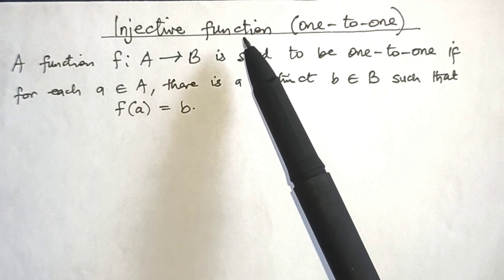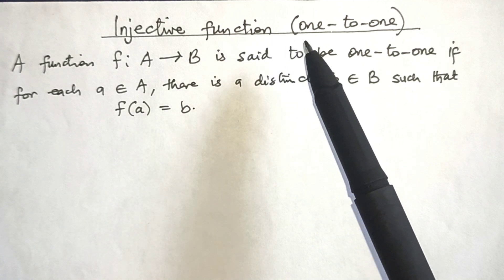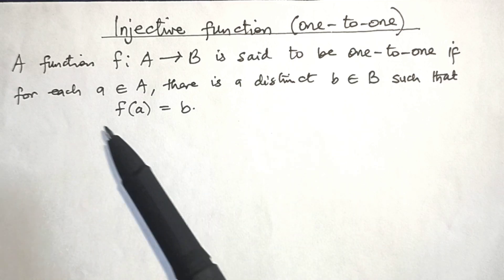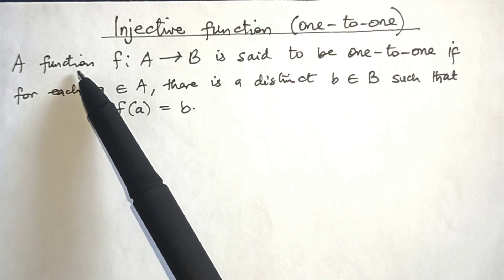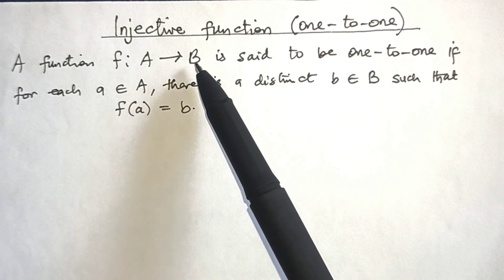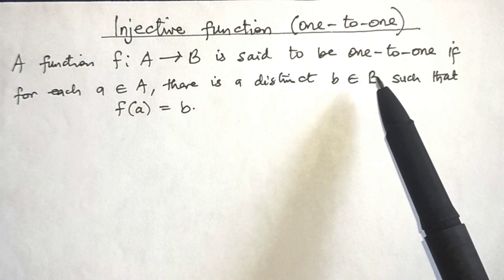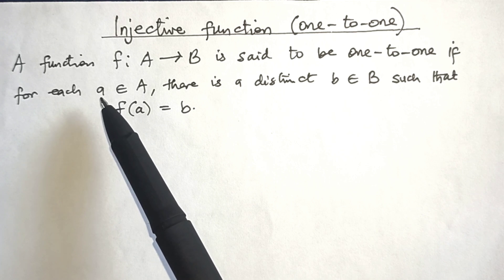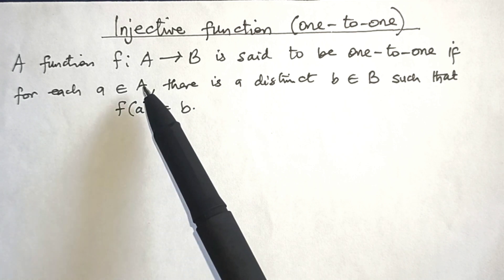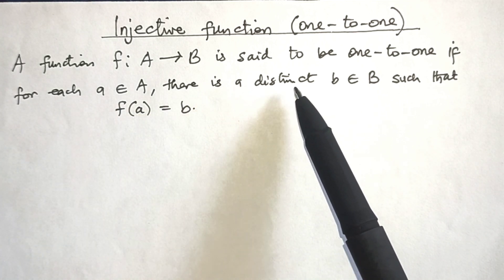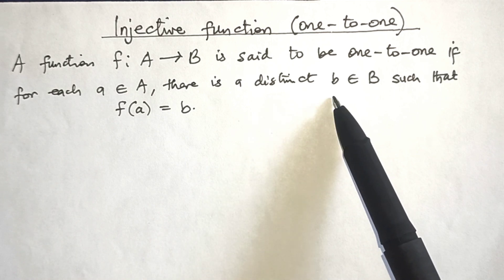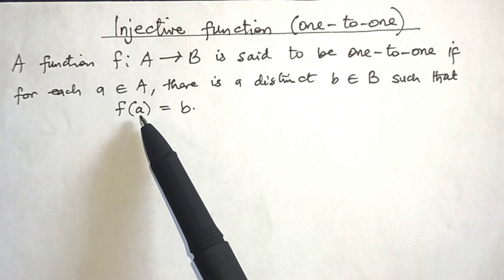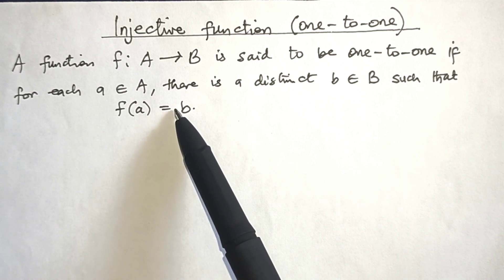The injective function is usually referred to as a one-to-one function. A function f from A into B is said to be one-to-one if for each element a in set A, there is a distinct element b in set B such that f(a) is equal to b.